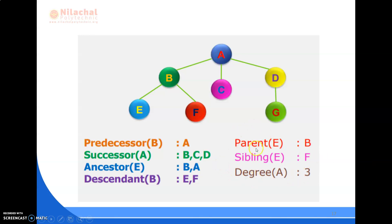Here is an example of all these terminologies. In the tree, A is the root node. The predecessor of B is its parent node, that is A. The successors of A are its children — B, C, and D. The ancestors of E are all its previous nodes on the path to root — that is B and A. The descendants of B are its child nodes — E and F.